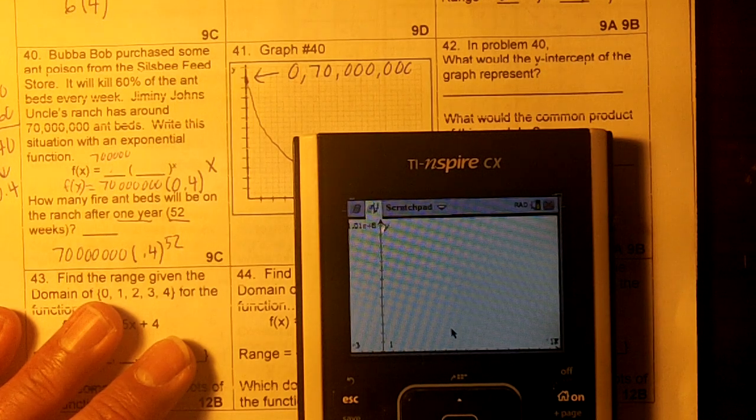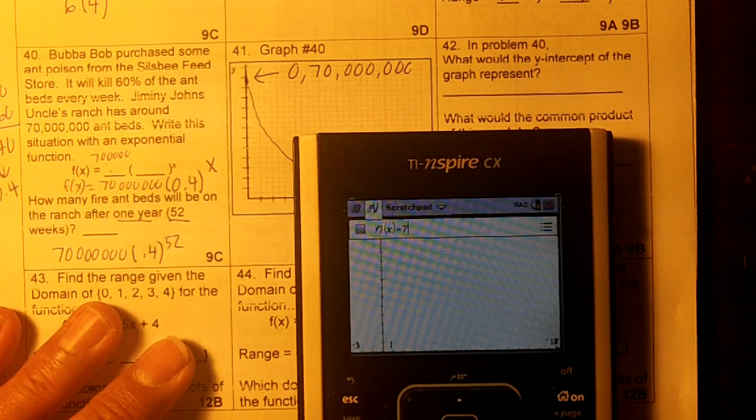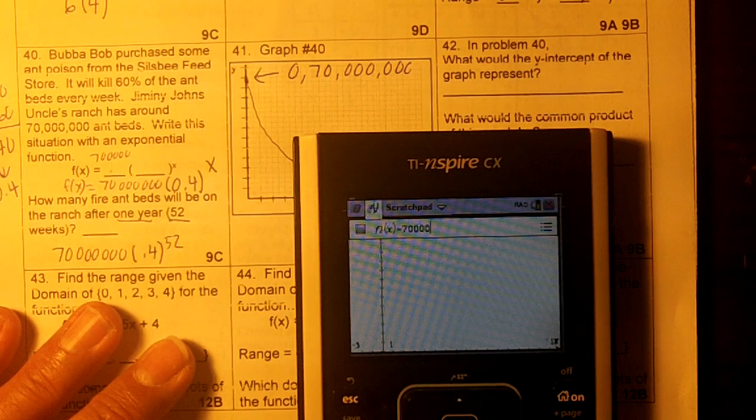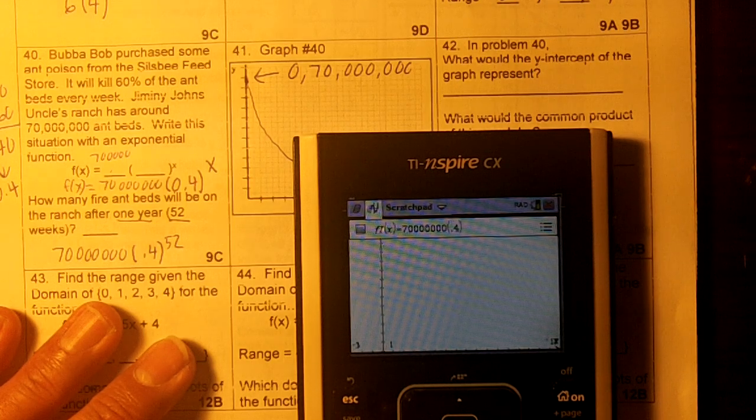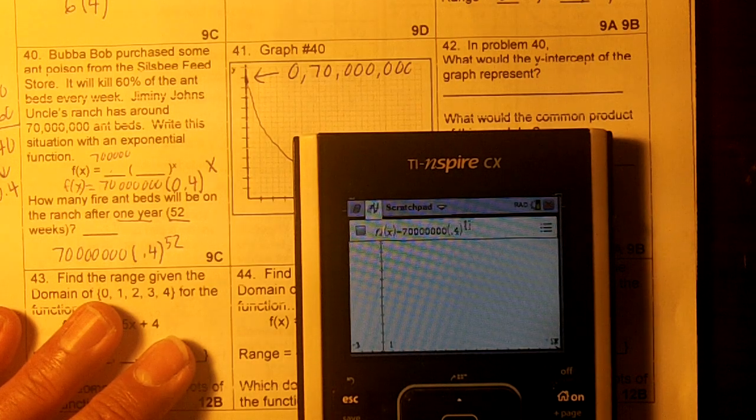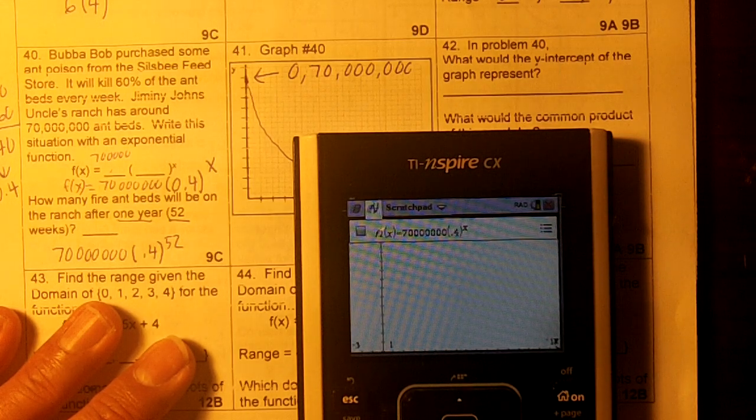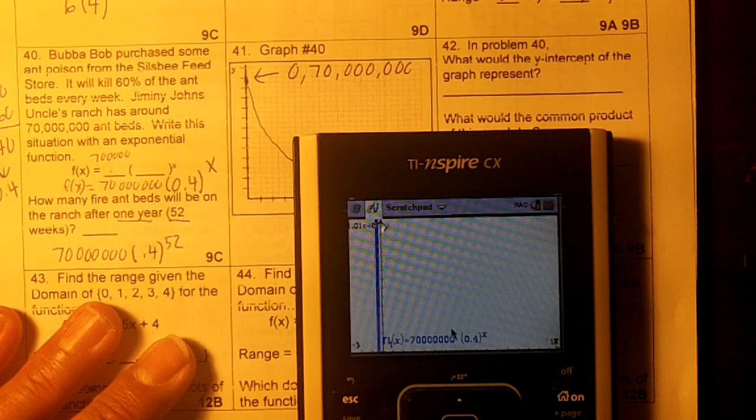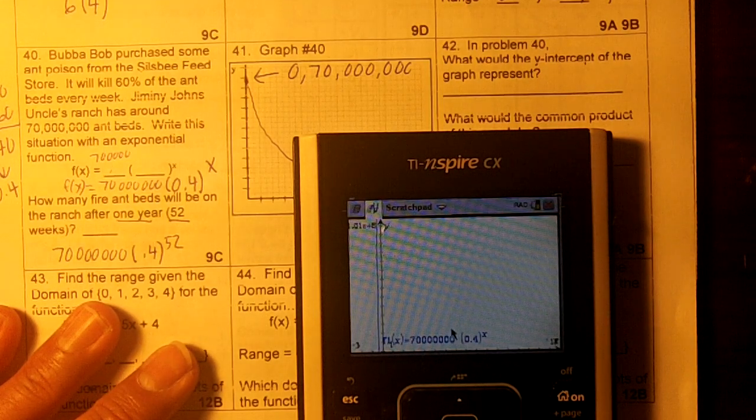So I'm going to punch in tab, then 70, 1, 2, 3, 4, 5, 6, parentheses, 0.4, and then I have to punch caret x. Not caret, caret x. Then hit Enter, and now it's going to work. Now I got my 0.4x.